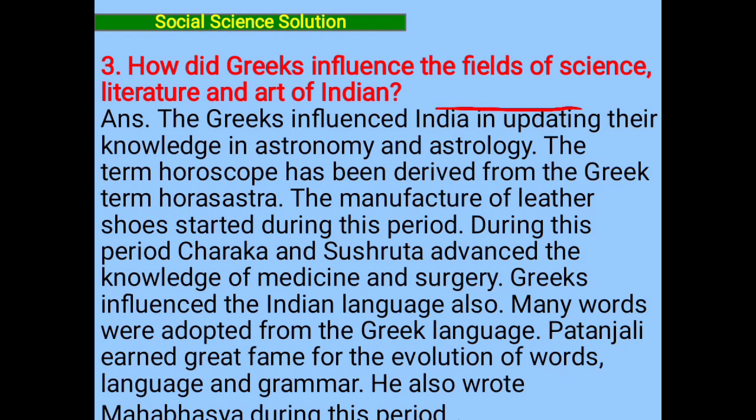Question number three: How did the Greeks influence the fields of science, literature and art of India? The Greeks influenced Indians by updating their knowledge in astronomy and astrology. The term 'horoscope' has been derived from the Greek term 'horstra'. The manufacture of leather shoes also started during this period.